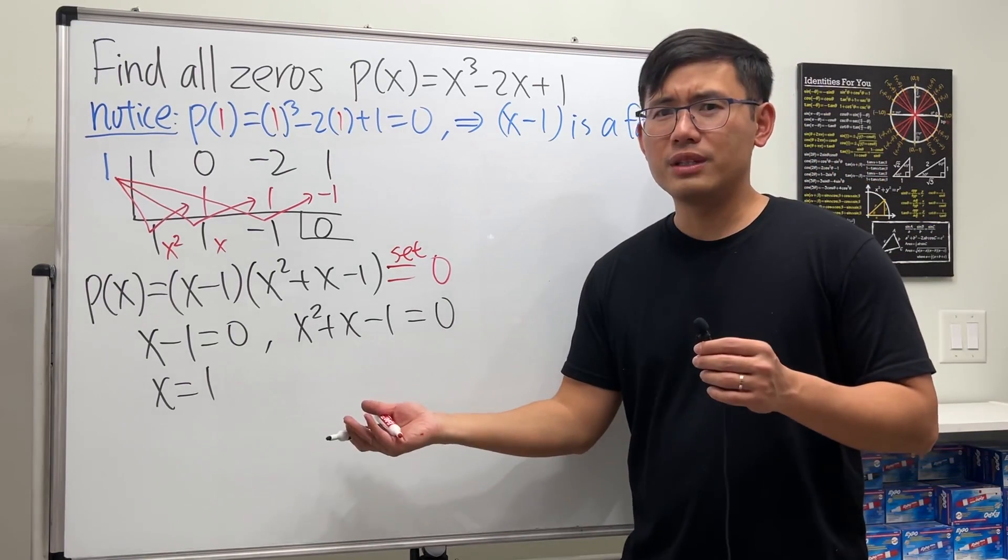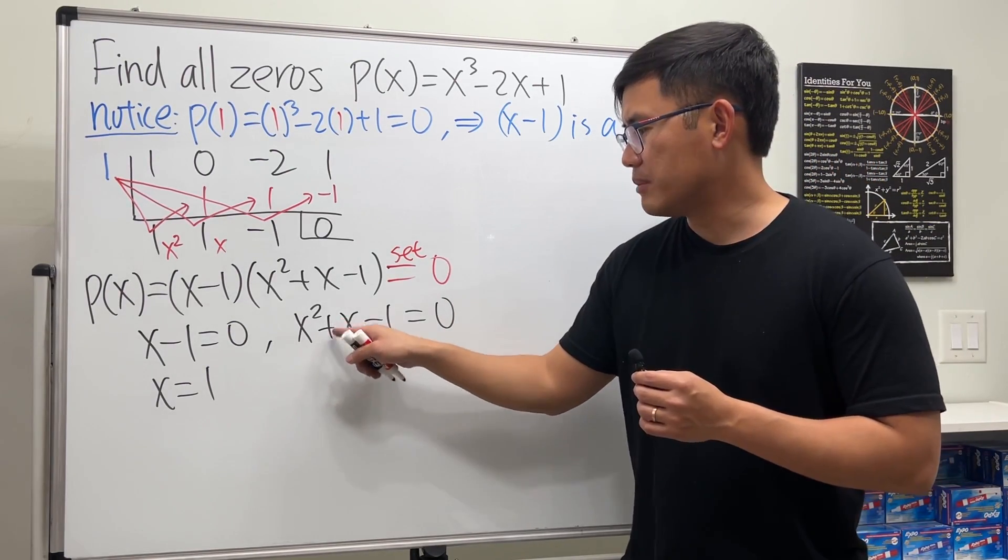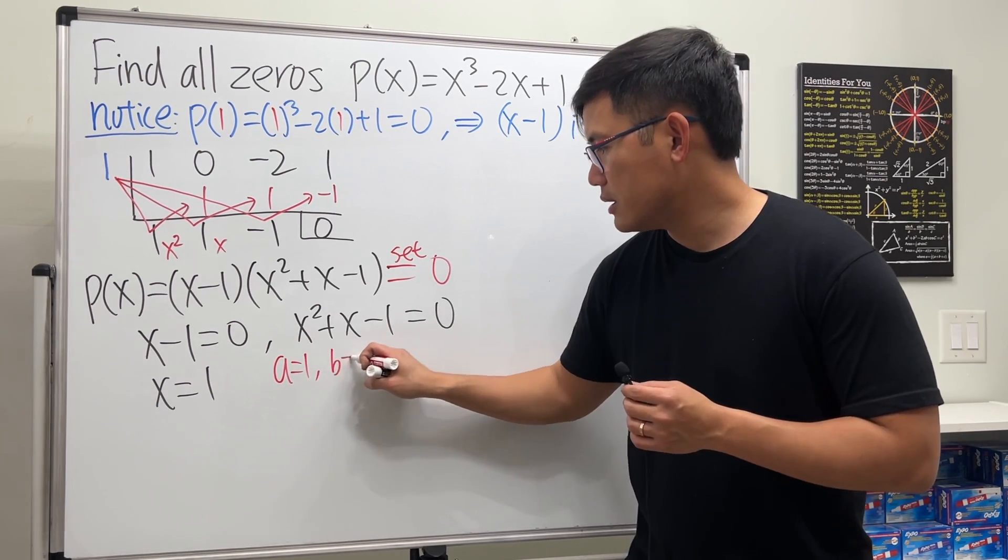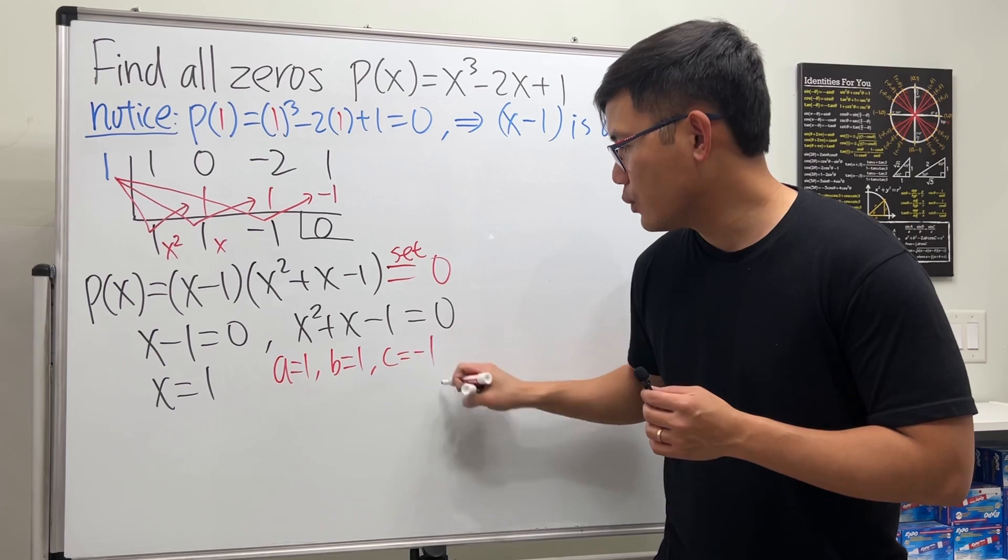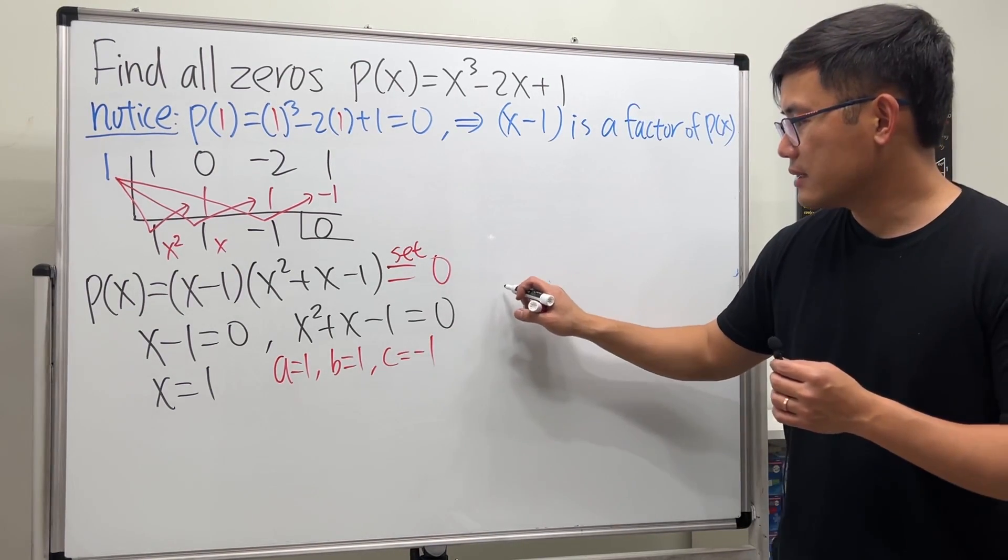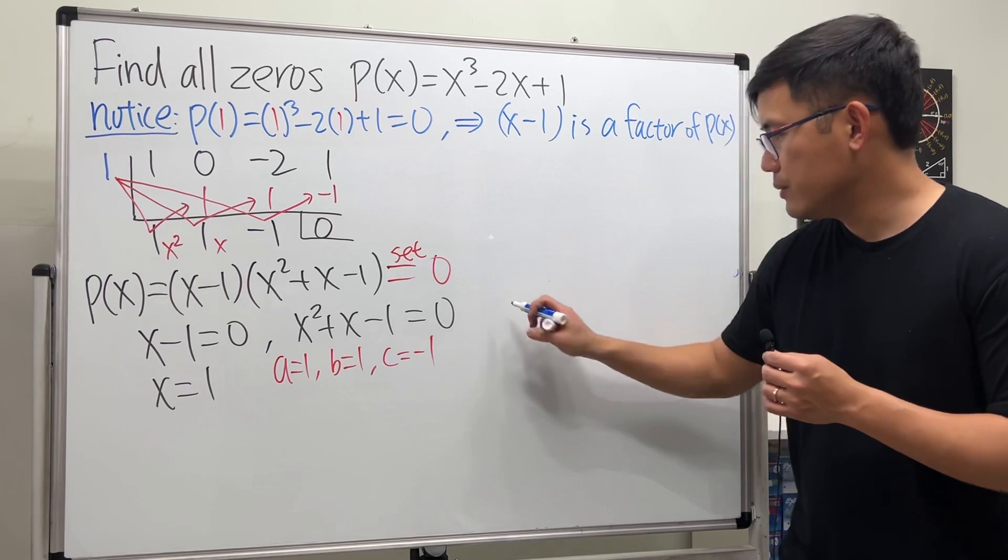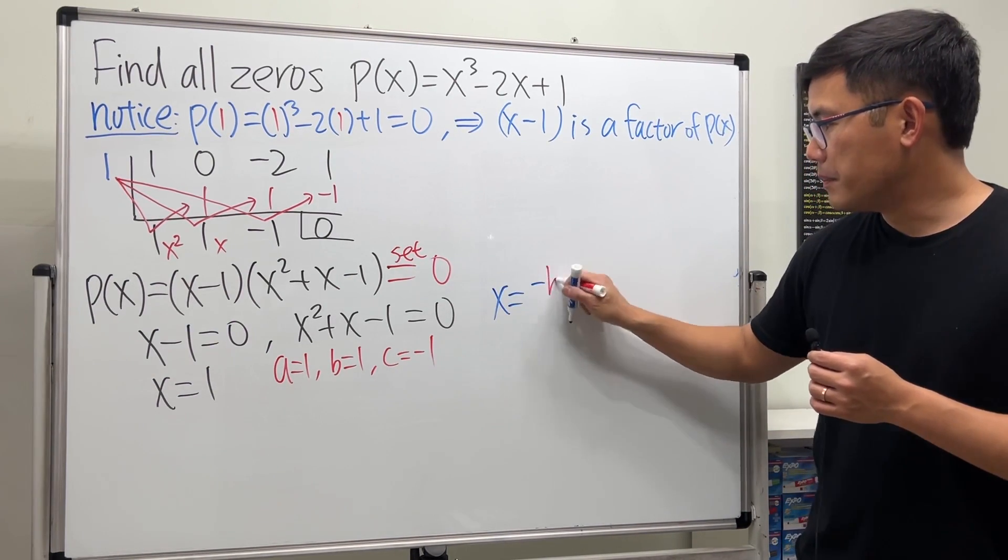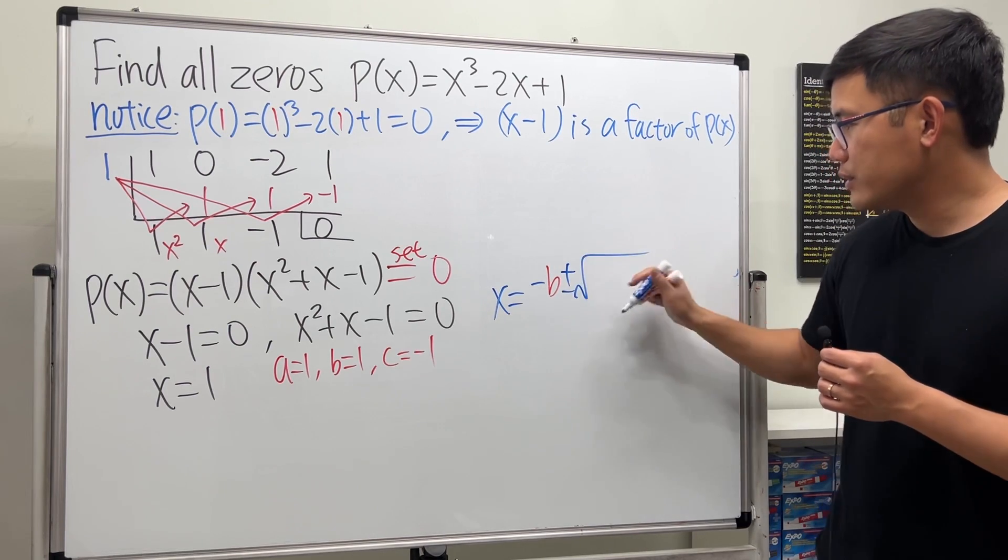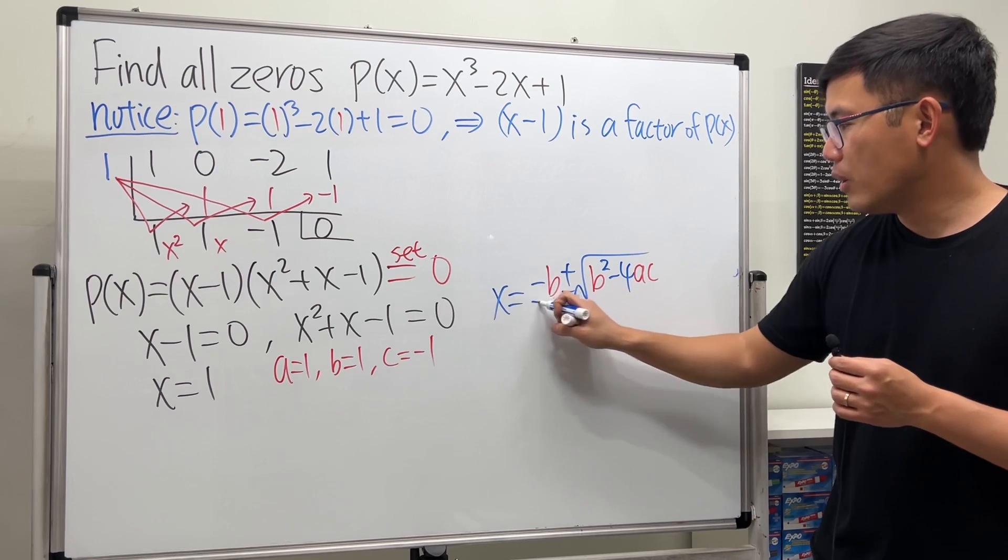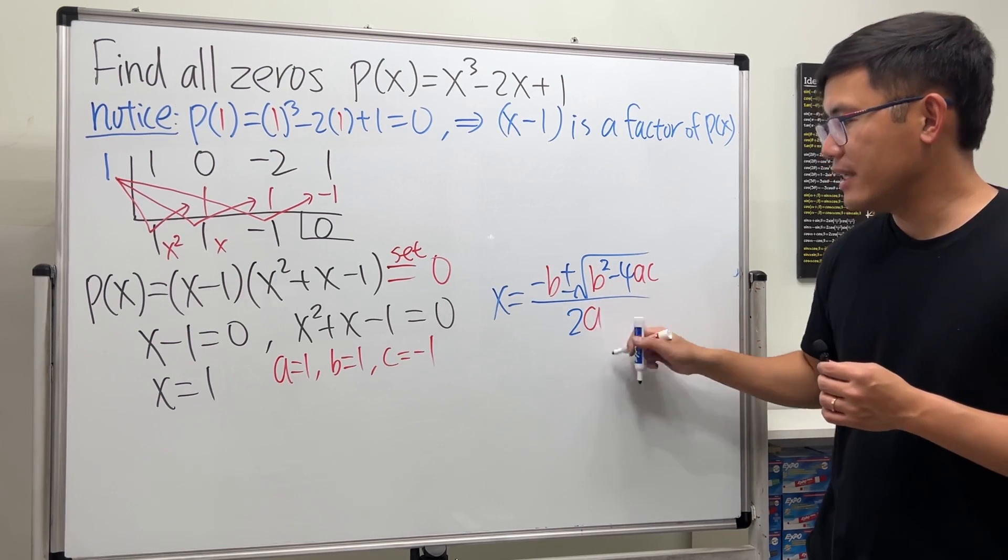Let's use the quadratic formula because this is not factoring in the middle. A is one, b is one, c is negative one, and I will remind you the quadratic formula is x equals negative b plus or minus square root of b squared minus 4ac all over 2a.